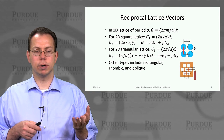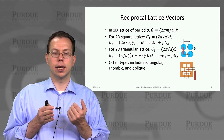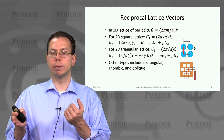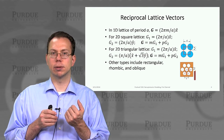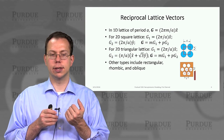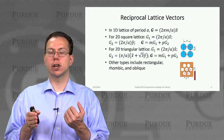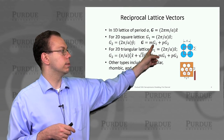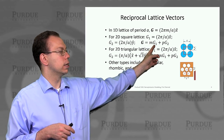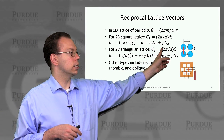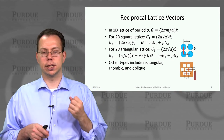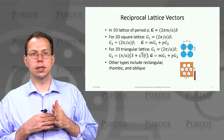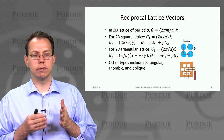In a 1-D lattice, a reciprocal lattice vector would be 2 pi over a, or 4 pi over a — always integer multiples of that elementary unit. In a square lattice, you generalize that approach in both x and y directions. The overall G is basically a sum of G1 in the x direction times an integer, plus G2 in the y direction times an integer. This could also extend to rectangular lattices if the lattice constants are different.